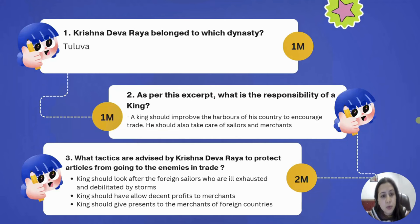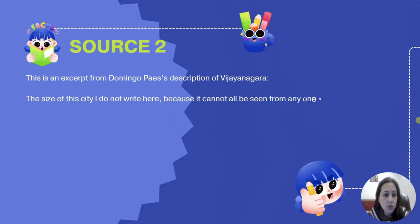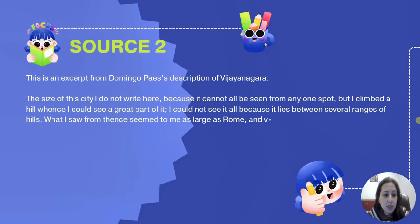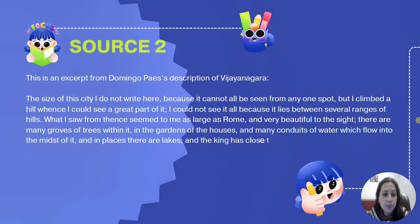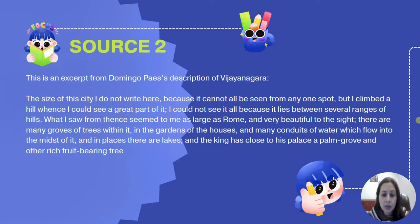Now let's move on to the next source, an excerpt from Domingo Pace's description of Vijayanagara. Domingo Pace was a traveler who came from Italy. He was fascinated by the prosperity of Vijayanagara and has mentioned what he observed there.